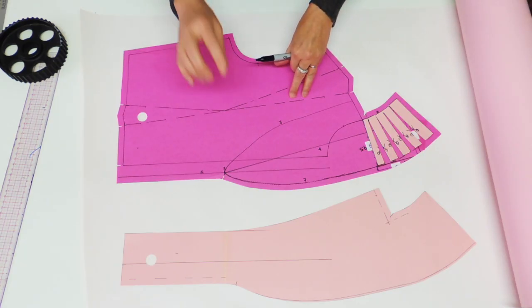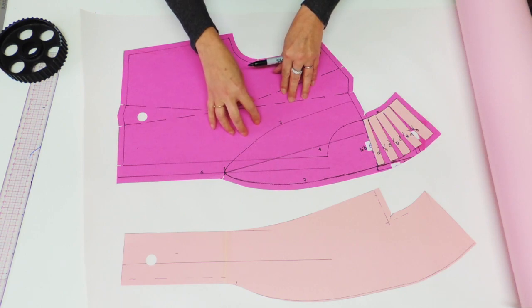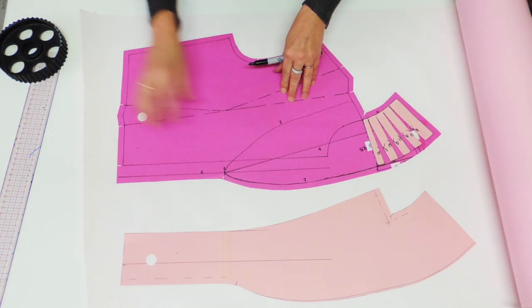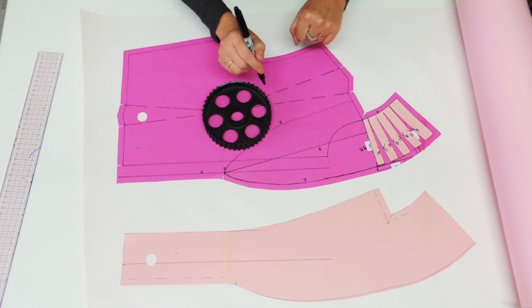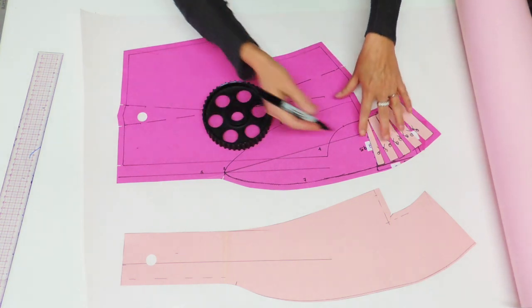As usual, when you want to do the grading of a pattern piece and you want to keep the original size as it is, I suggest you trace it on another piece of paper or cardboard.